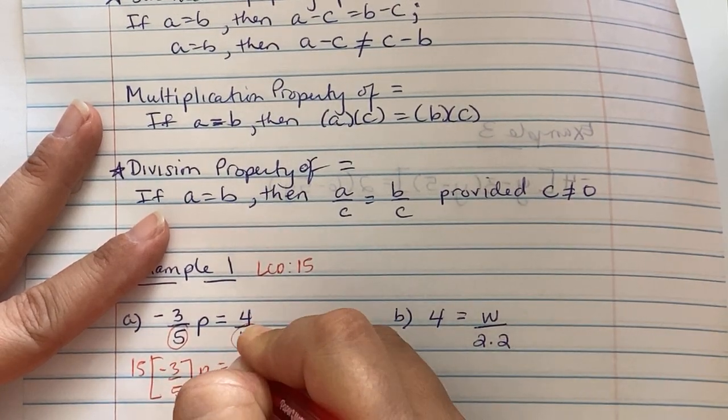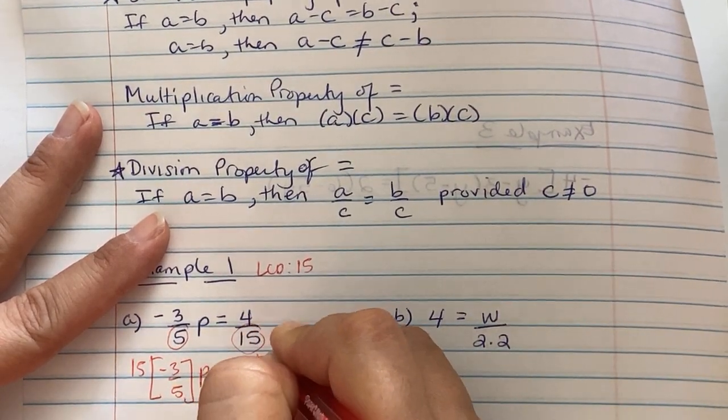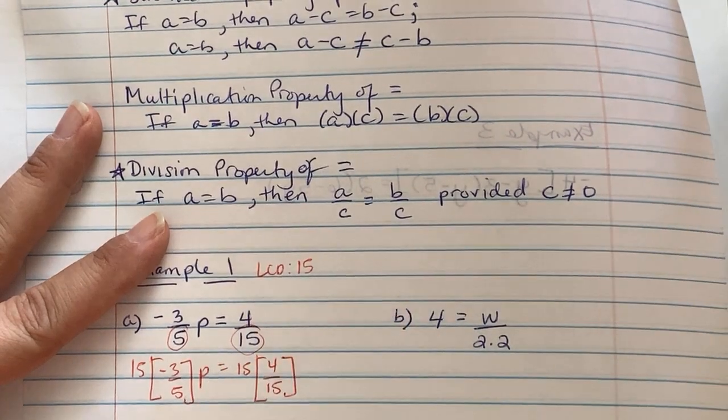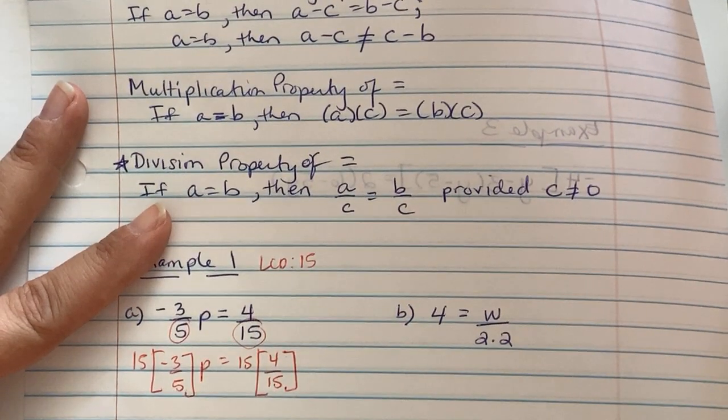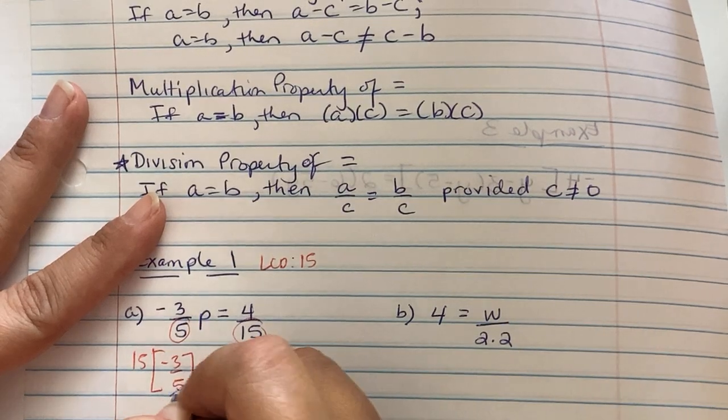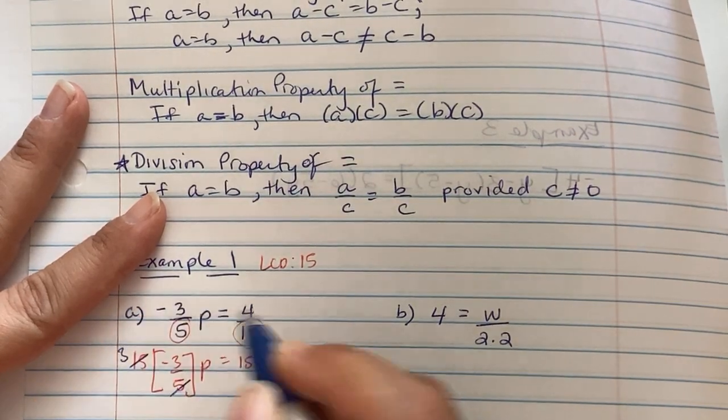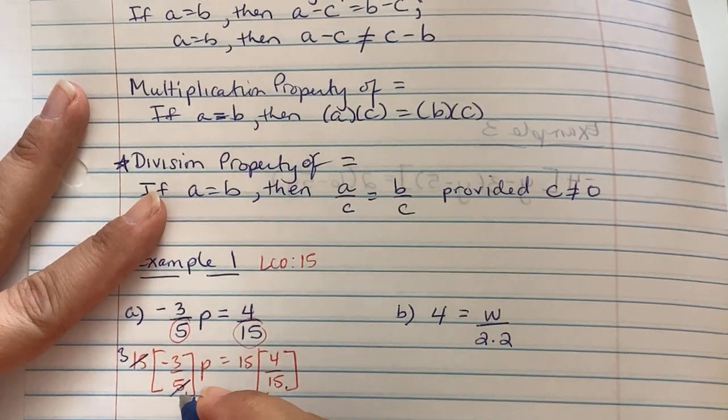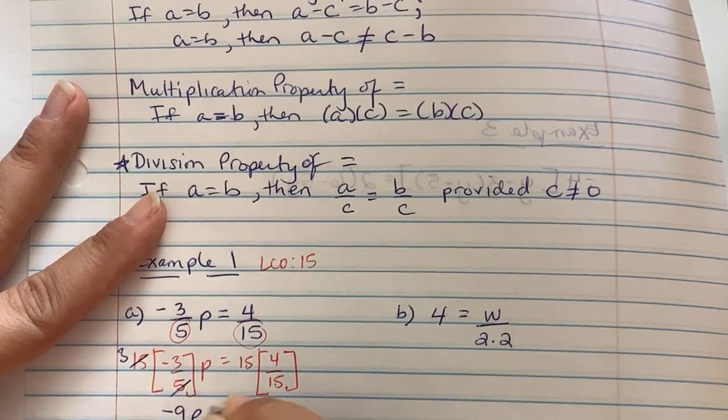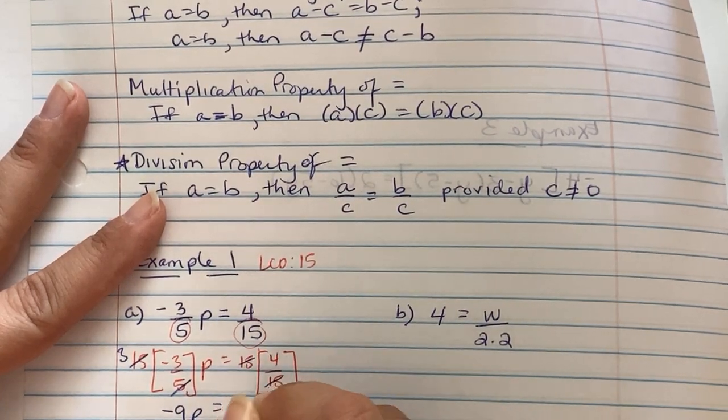So I'm going to write fifteen bracket negative three-fifths p on the outside, equals fifteen, four over fifteen. Cancel out your like terms. Well, five goes into fifteen actually three times, so I see three times negative three, that's negative nine with a p. The fifteenths cancel out with a four.